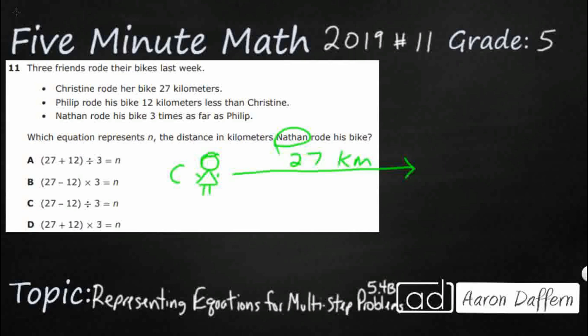Now, Phillip rode his bike 12 kilometers less than Christine. So that's interesting. So let's draw Phillip here. I am going to put a P right here. And I don't know exactly how far that's going to be, but I do know it's less.